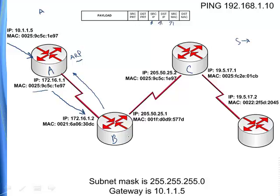Router B now has the ICMP packet, still with the original source IP of computer A and the destination of 192.168.1.10. Router B grabs the packet, strips off source and destination MAC addresses, puts its own MAC as the source, and ARPs out for router C. Router C replies with its MAC address. Router B puts it in the destination MAC field and forwards the packet up to router C, and so on.